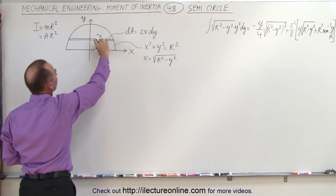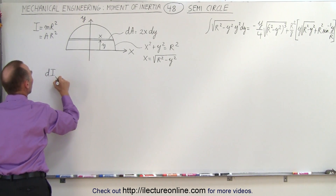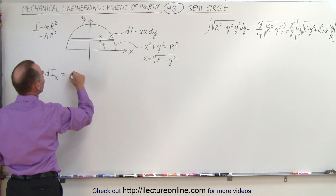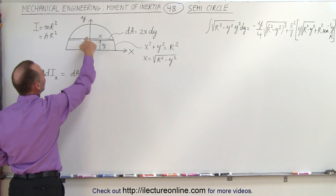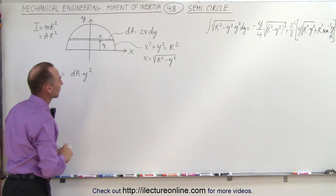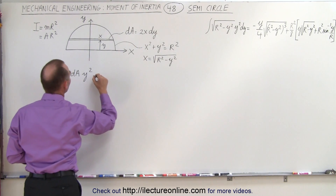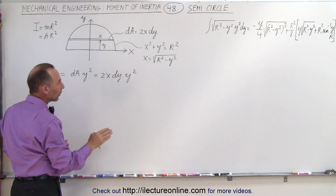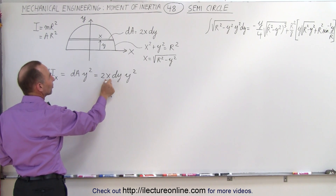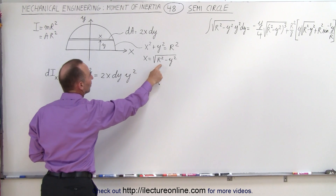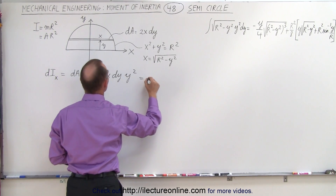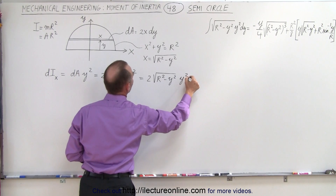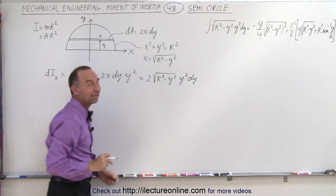The moment of inertia dI for that small strip, a distance y away from the x-axis — because it is going to be relative to the x-axis — is going to be equal to the area dA times the distance squared, y². The dA can be written as 2x dy, so this is equal to 2x dy times y². In order to integrate that we must write this as a single integral in y, so we replace x by its expression in terms of y: 2 times the square root of r² minus y² times y² dy — and that's why we need that integral up there.